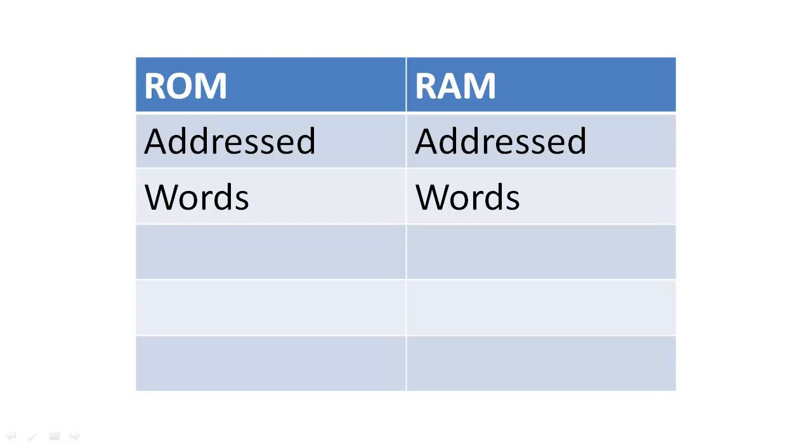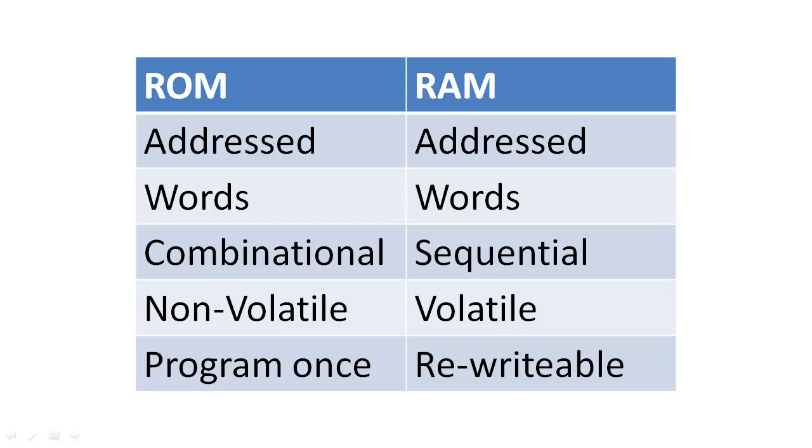Although ROMs and RAMs are both information storage devices that store information at addresses in words of a fixed length, they serve different purposes in a computer. ROMs are devices that are combinational circuits that are programmed once, ideally, and will never lose their information, even more ideally, even when they lose power.